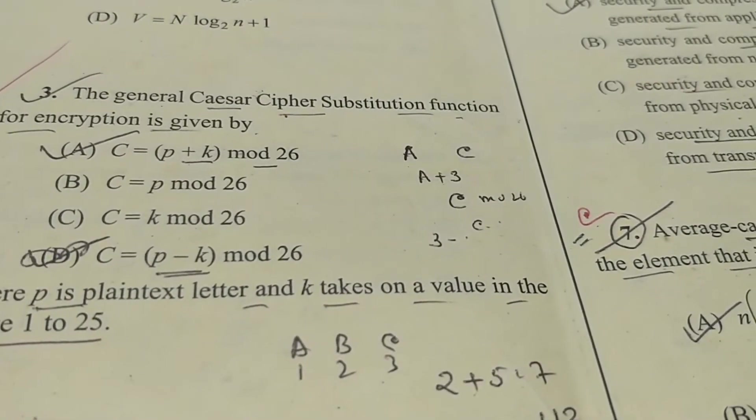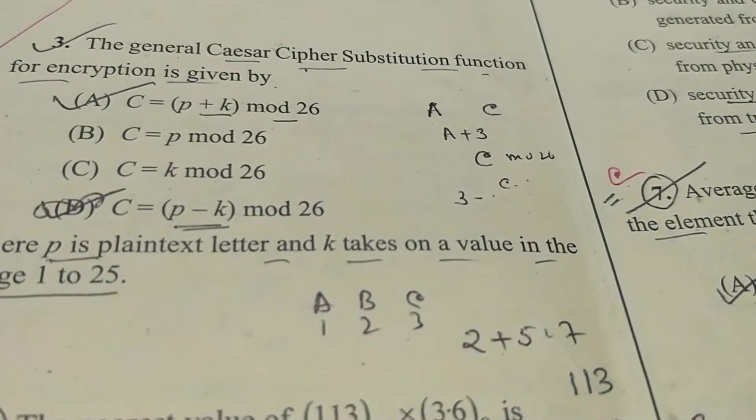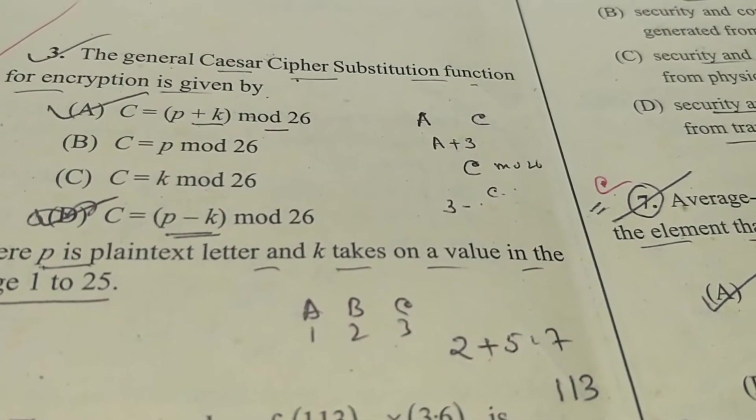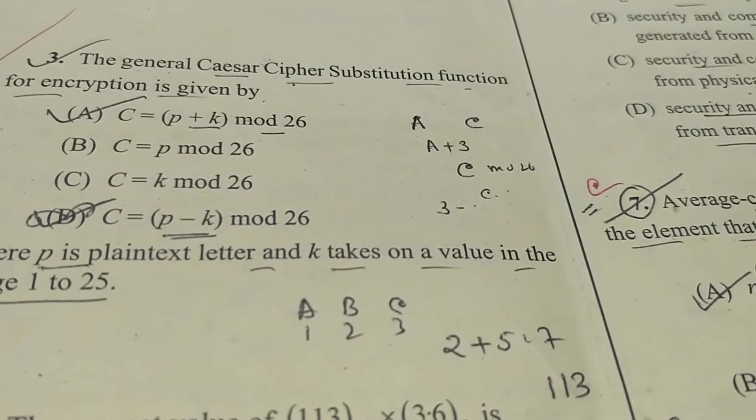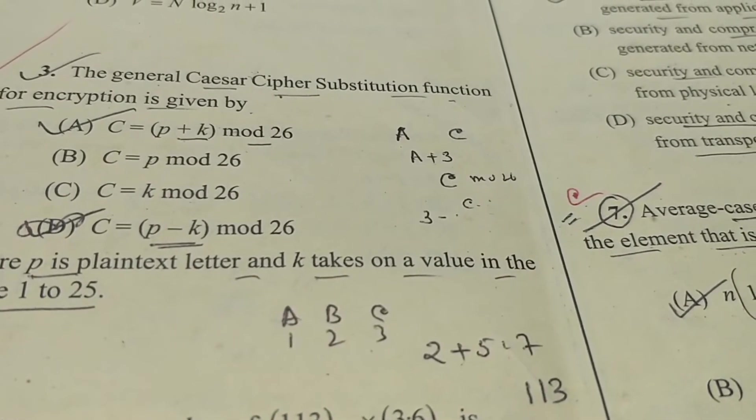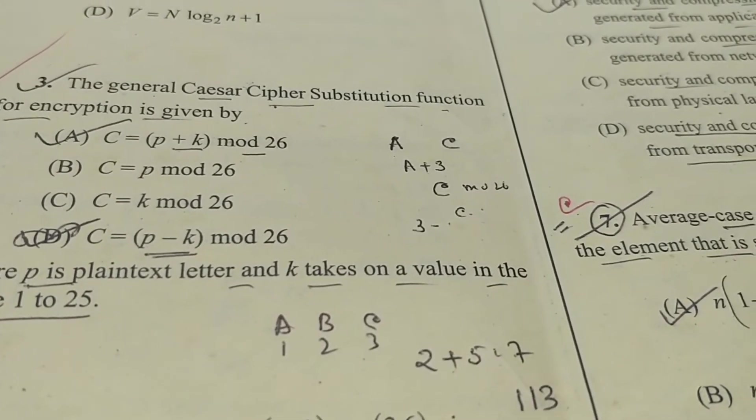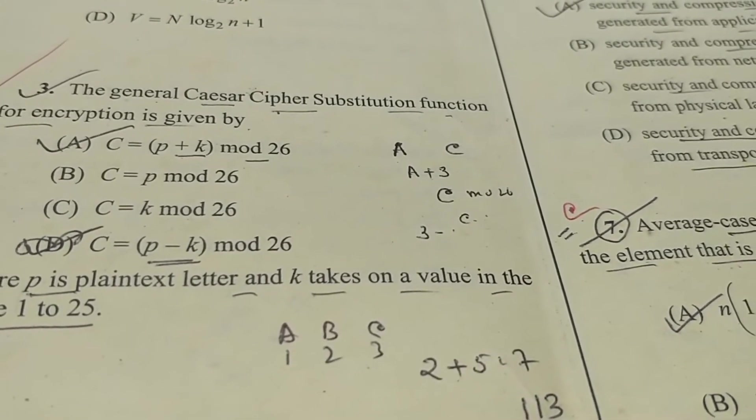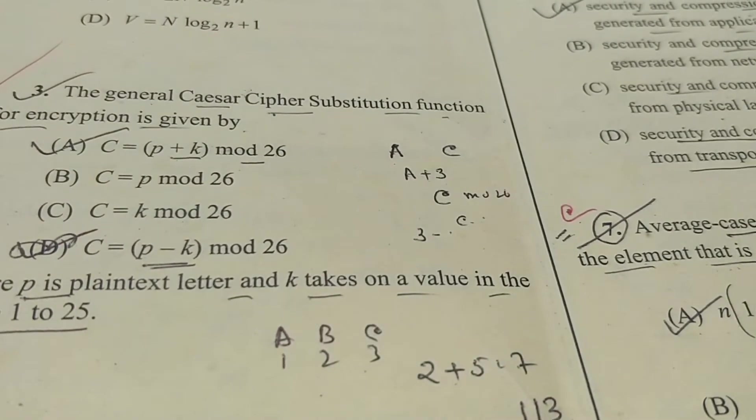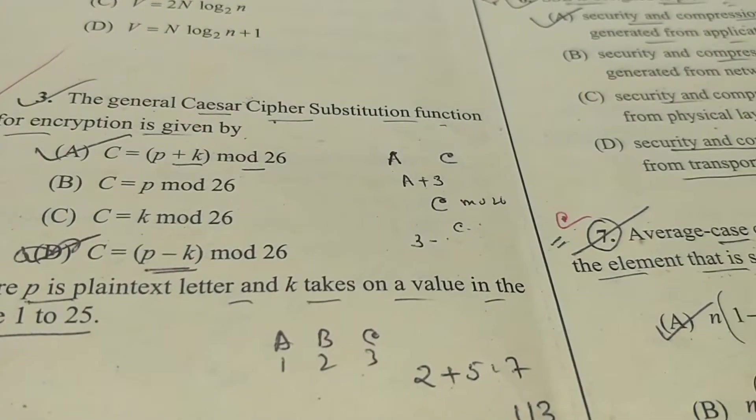Now the next question is three: the general Caesar cipher substitution function for encryption is given by - the correct answer is A. C is equal to P plus K mod 26, because here P is the plaintext letter and K is any key value between one to 25. So we add this K value to the plaintext and perform the mod 26 operation. So A is the correct.